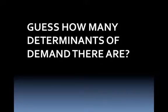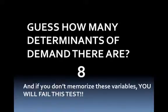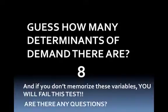So guess how many determinants of demand there are? Four, five, three — you'd be wrong with all of them. There are actually eight, and these eight are extremely important. Some textbooks reduce it down to six, others as little as five, but I make it eight. You're going to see that a couple of them branch off of one another. If you don't memorize these, you're going to fail the test. A vast majority of your tests at the end of this unit is going to be based around these eight determinants of demand and the determinants of supply as well.